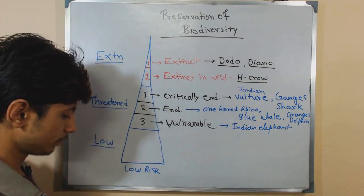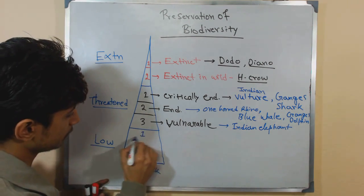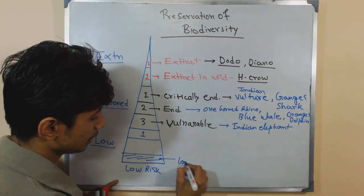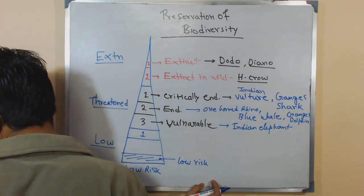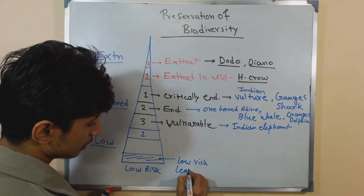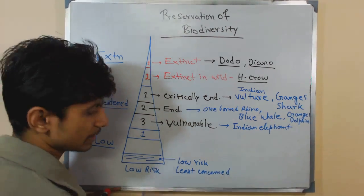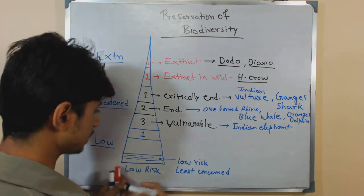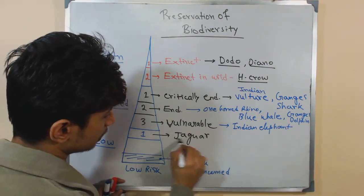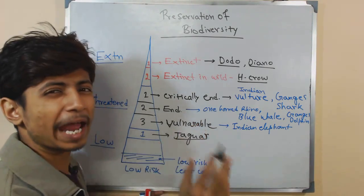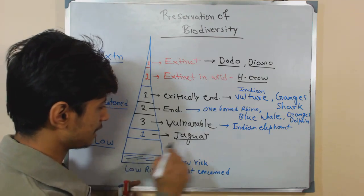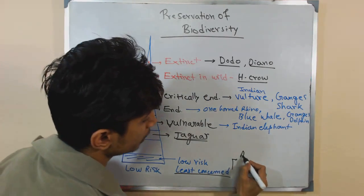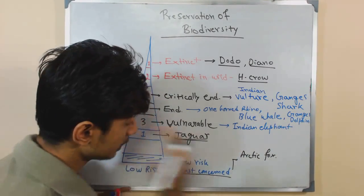Among the low risk species, we have two sub-types: near threatened and least concern. Near threatened — the example is the Jaguar, which is very famous partly due to brand names sharing its name. The least concern category example includes the Arctic Fox and Brown Bear.